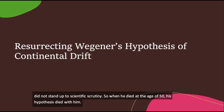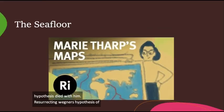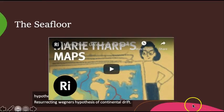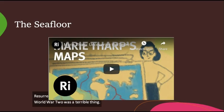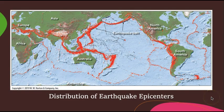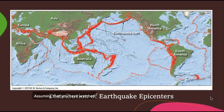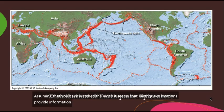Resurrecting Wegener's Hypothesis of Continental Drift. World War II was a terrible thing, but it did bring about new technologies which have been helpful, including a better understanding of the workings of Earth. One such technology was sonar, which allowed us to map the seafloor. Let's consider this video from your lecture textbook reading. Assuming that you have watched the video, it seems that earthquake locations provide information about the workings of Earth and plate tectonics.